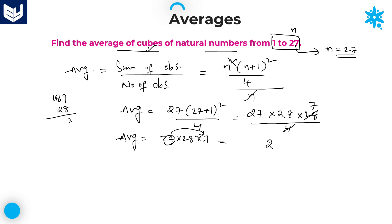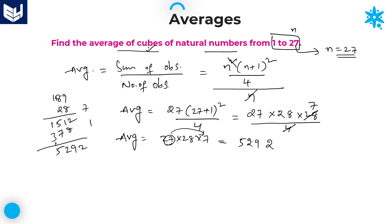Calculating 189 × 28: 8 × 9 = 72; 8 × 8 = 64, plus 7 carry = 71; 8 × 1 = 8, plus 7 carry = 15; then 2 × 9 = 18; 2 × 8 = 16, plus 1 = 17; 2 × 1 = 2, plus 1 = 3. Adding all values gives 5292. Therefore, the average of cubes of natural numbers from 1 to 27 is equal to 5292. That is the required answer.